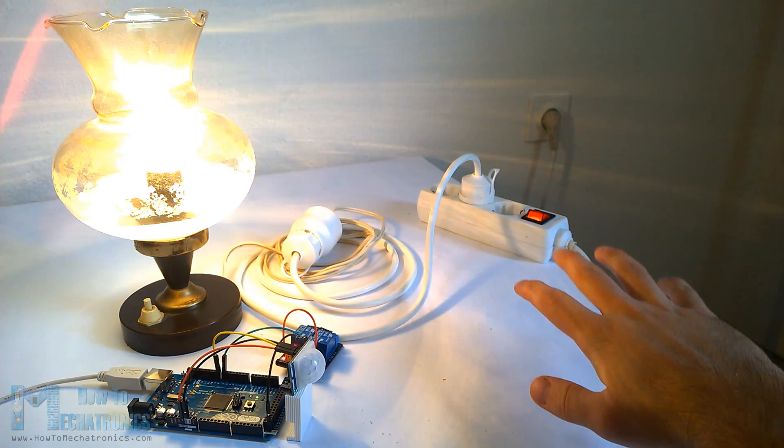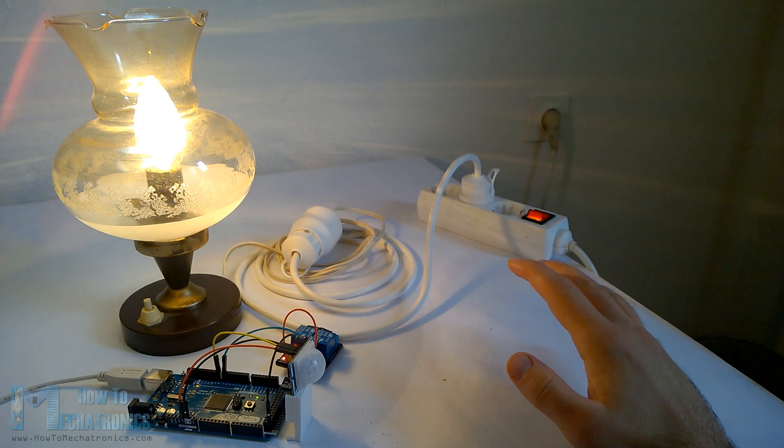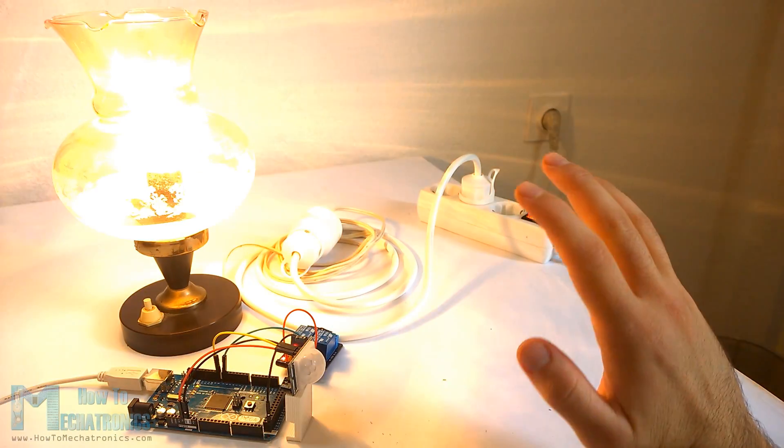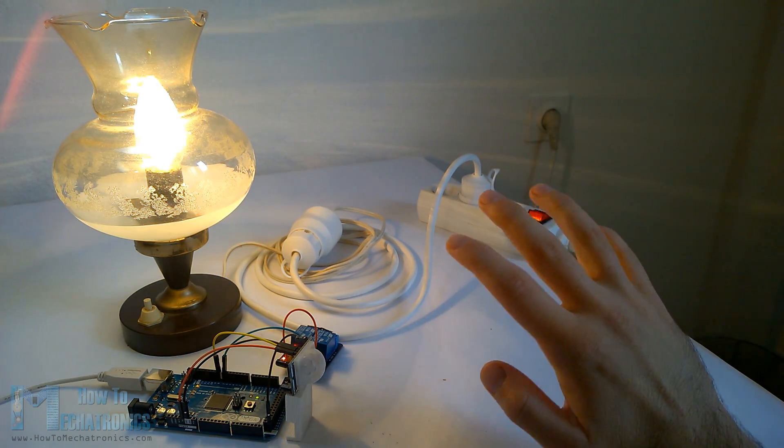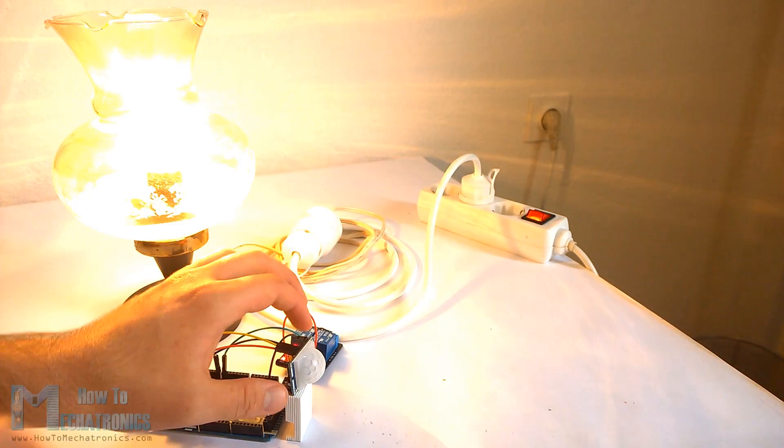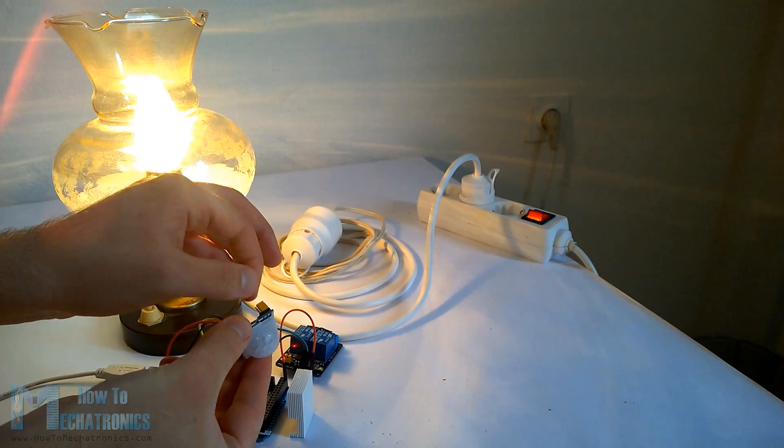Now, when I will put my hand in front of the sensor, the relay will activate the lamp, but note that even if I move my hand constantly, the lamp will turn off after the adjusted delay time is over because the PIR sensor is in non-repeatable trigger mode.